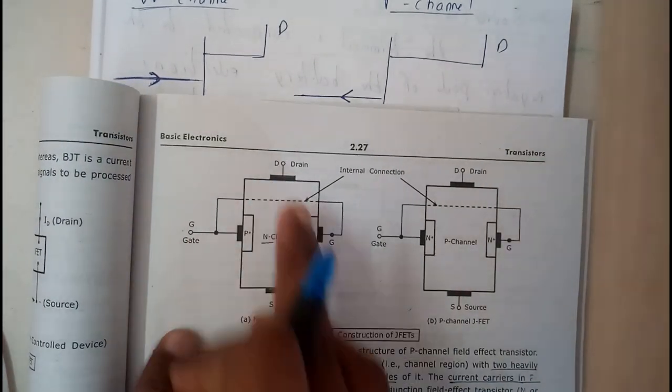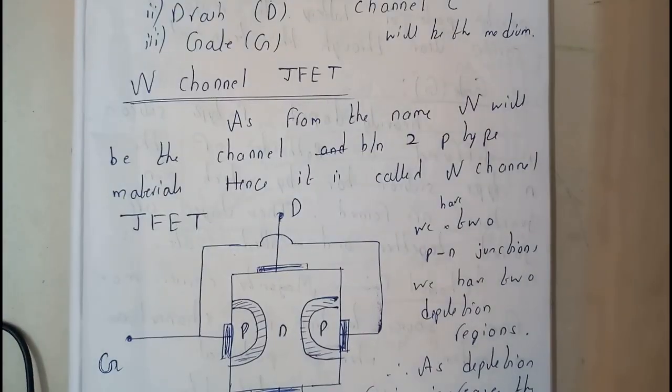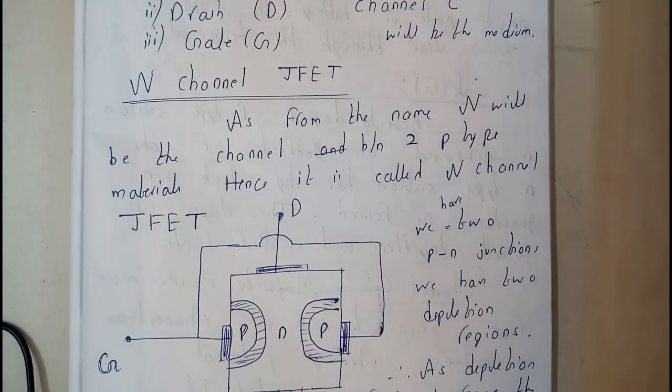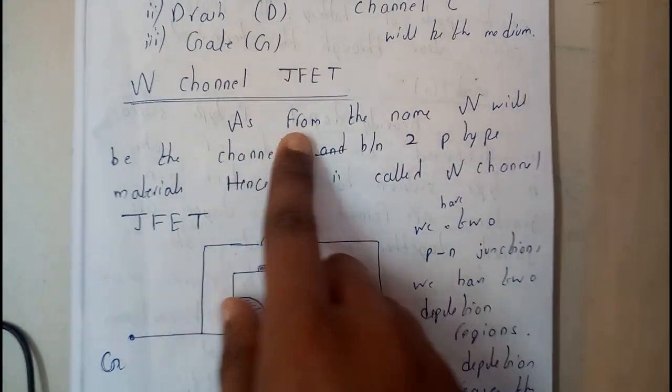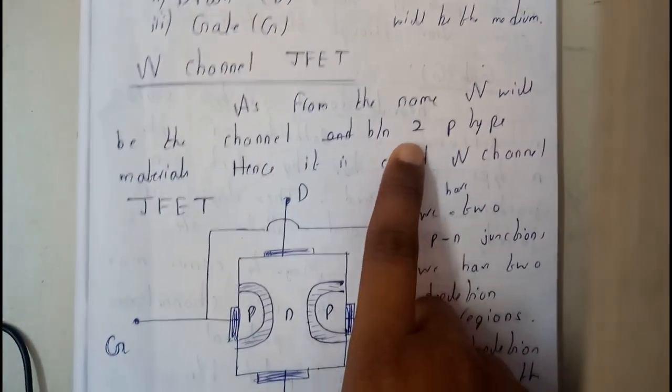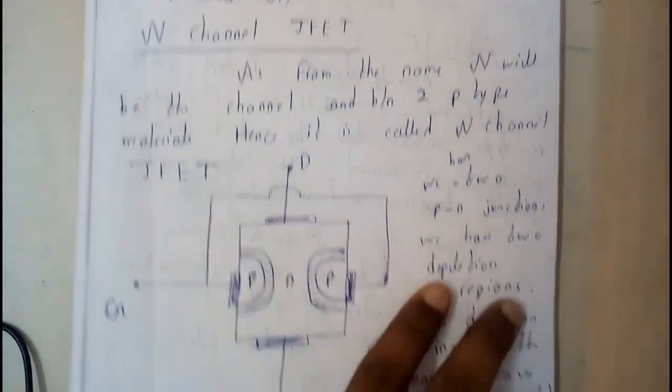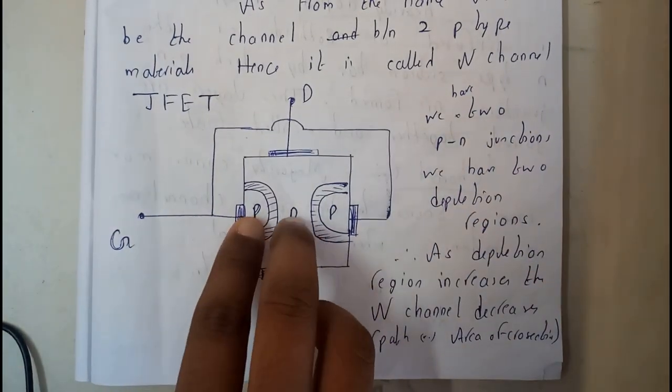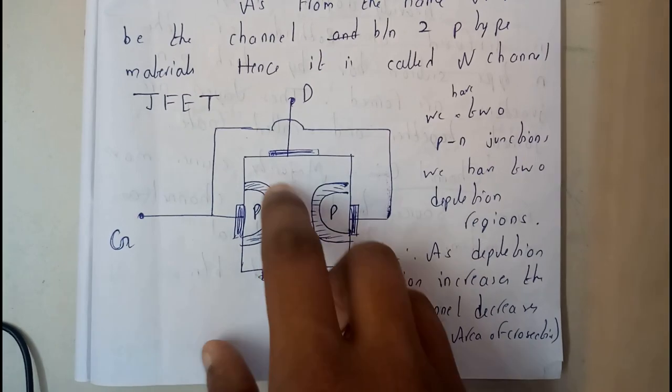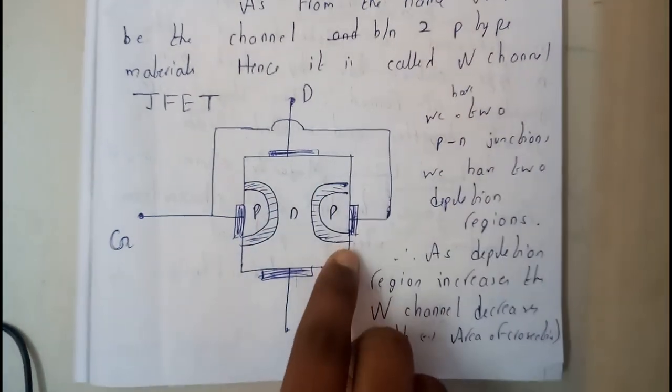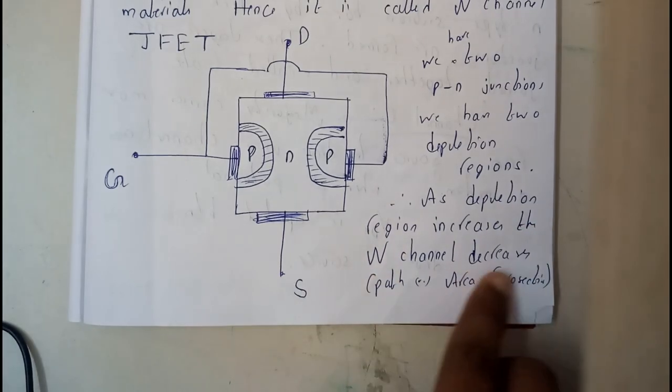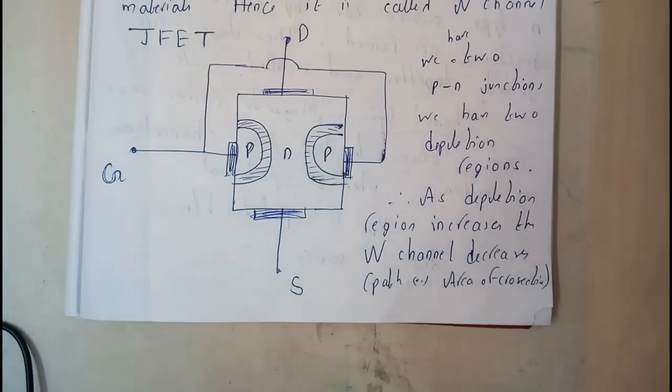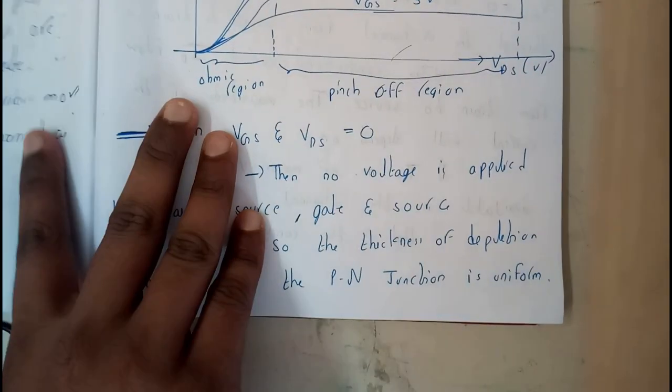Let us go through these points: source, gate, drain. I'll be discussing all about n-channel first. Similar points you can write for p-channel also. From the name, n-channel will be the channel between two P-type materials, hence it is called n-channel JFET. We have two PN junctions, we have two depletion layers. As depletion region increases, the n-channel decreases. If these depletion layers are increasing, the n-channel is going to vanish slowly.